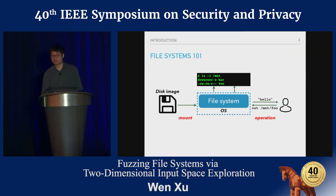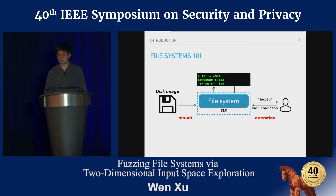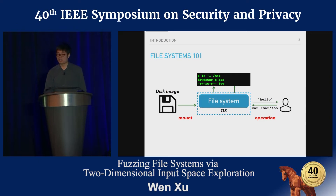Let's first talk about what file systems are and how users use them. Normally we store data on a disk image, then mount it through the operating system where the file system module is installed. The image is mounted to a specific folder, and then users, applications, or operating systems can access it by invoking some system calls.